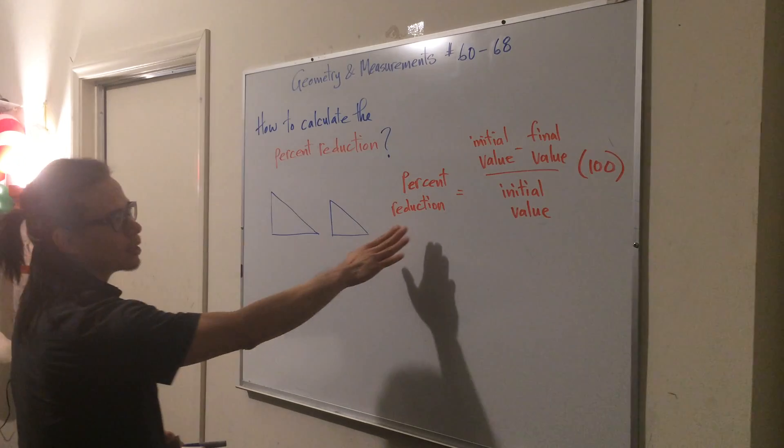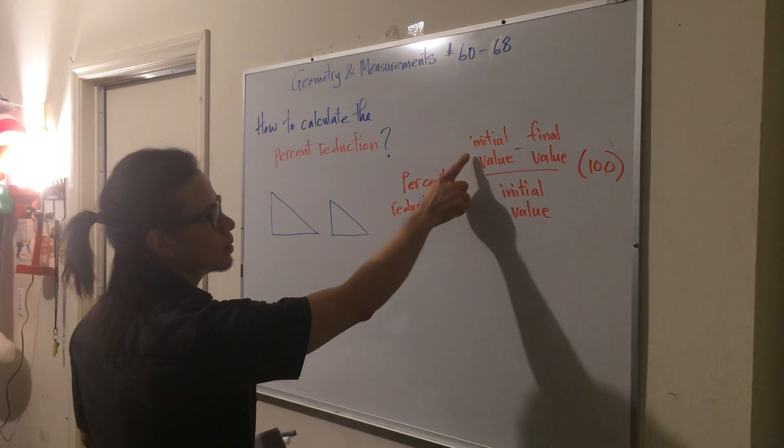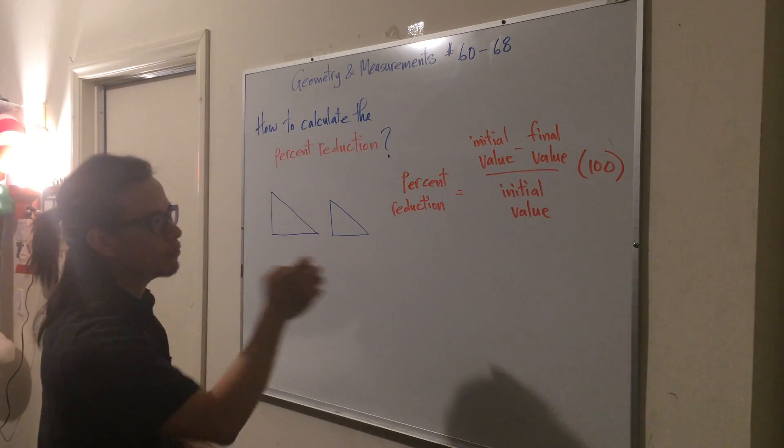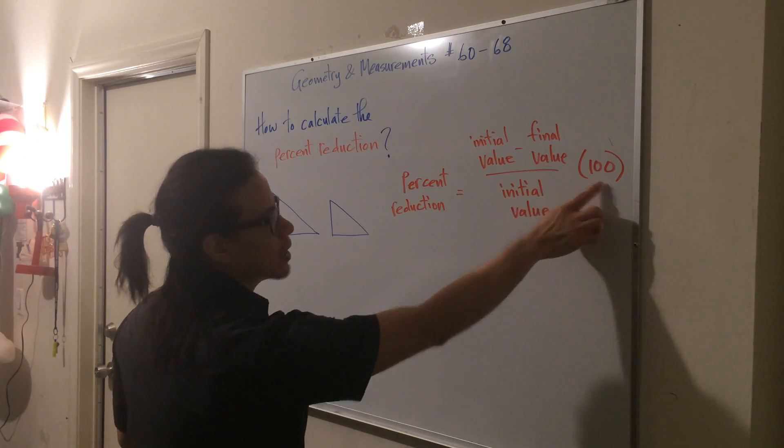So to calculate the percent reduction, we can use this formula here. Take the initial value minus the final value, divide it by the initial value, and multiply everything by 100.